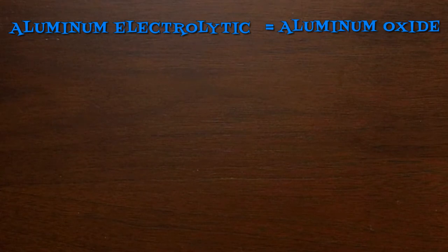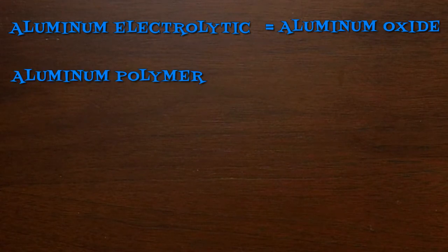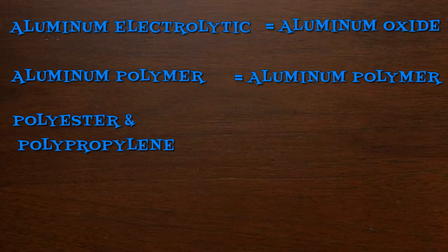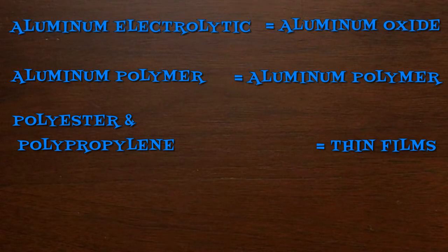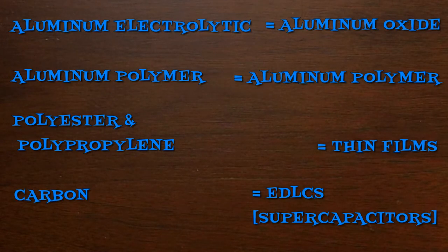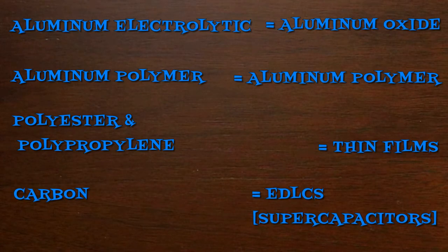Here's an example. Our industry-leading aluminum electrolytic capacitors are made with aluminum oxide. Our aluminum polymer caps are made using, you guessed it, aluminum polymer. Riddle me this: how do polyester and polypropylene film caps get their names? From the thin films we use to make them. Carbon's a heavy hitter — we use it in our ADLCs, aka supercapacitors or ultracapacitors.